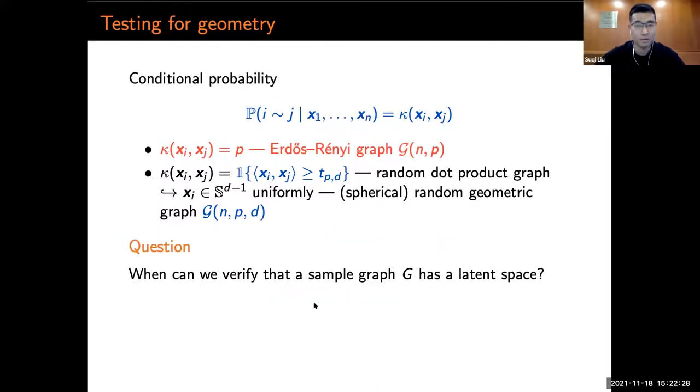The first step to understand those models is the following question. For a given simple graph, how can we verify that it actually has an underlying latent space? In practice, this corresponds to the question, for example in social networks, does there exist a feature space such that people are connected through them?